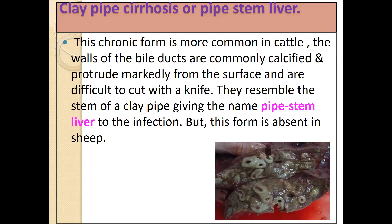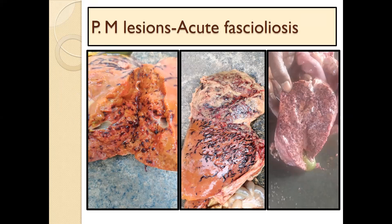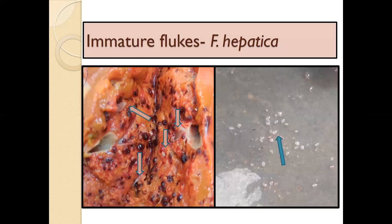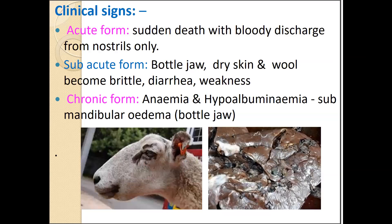Clay pipe cirrhosis or pipe stem liver is a chronic form of fascioliasis commonly observed in cattle and completely absent in sheep. Diarrhea is a common clinical feature of ovine fascioliasis. These pictures show cut sections of liver with immature flukes, migratory tracts, and hemorrhages with a honeycomb-like structure due to migration of immature flukes. In the acute phase of fascioliasis, there is sudden death with bloody discharge oozing from the nostrils only.